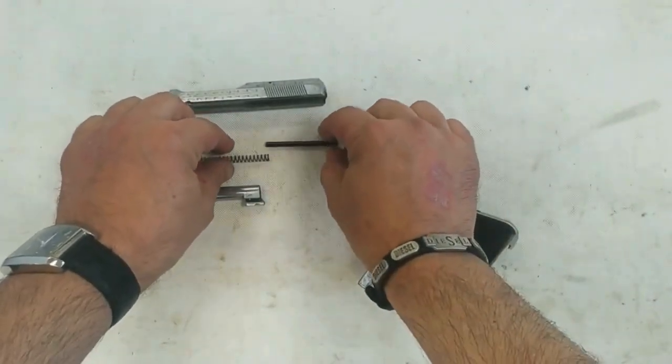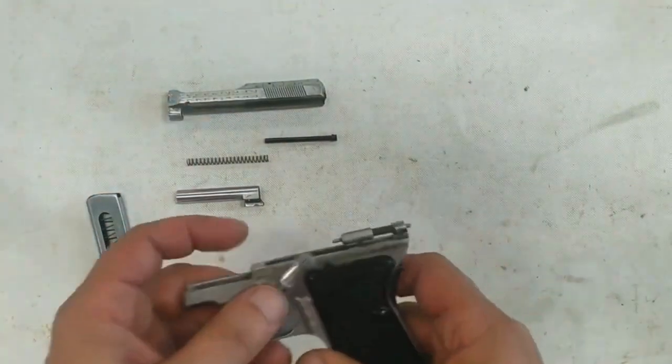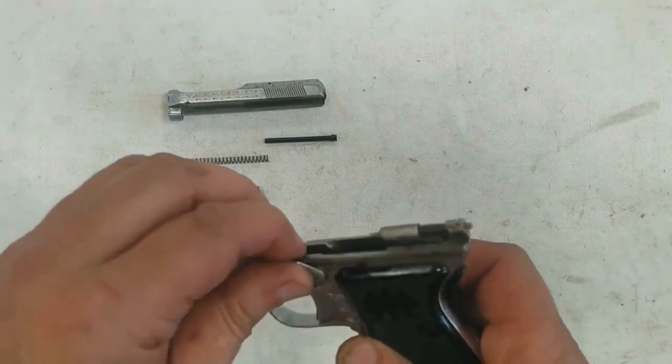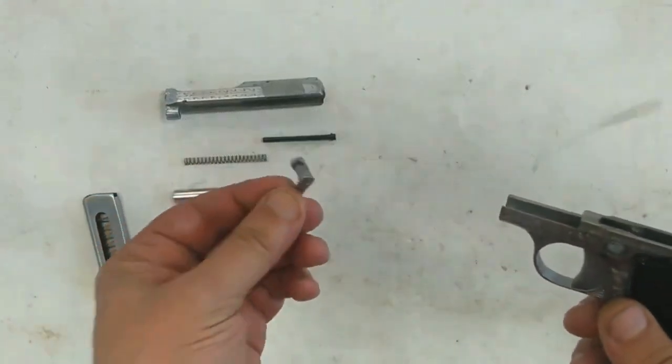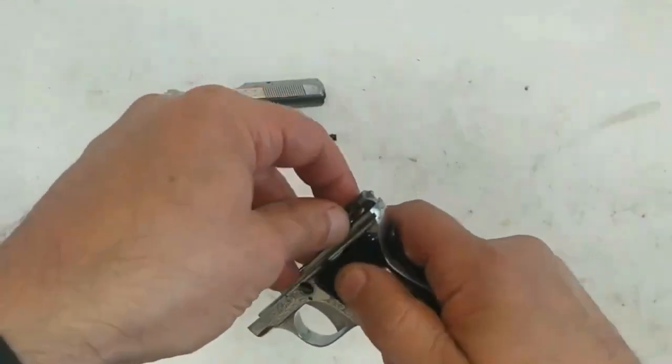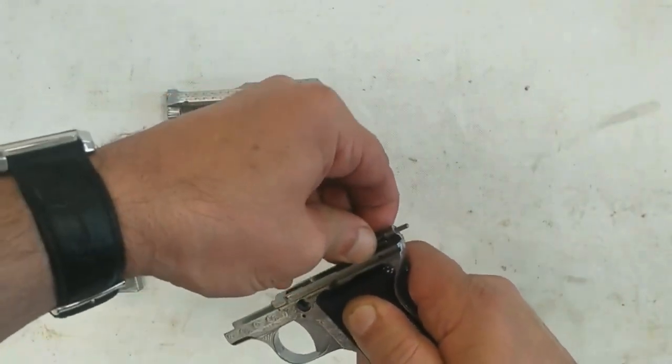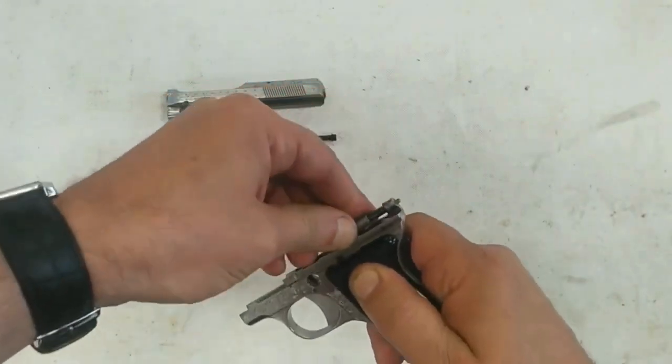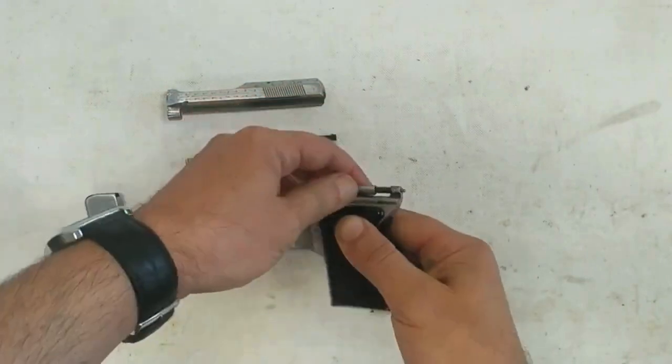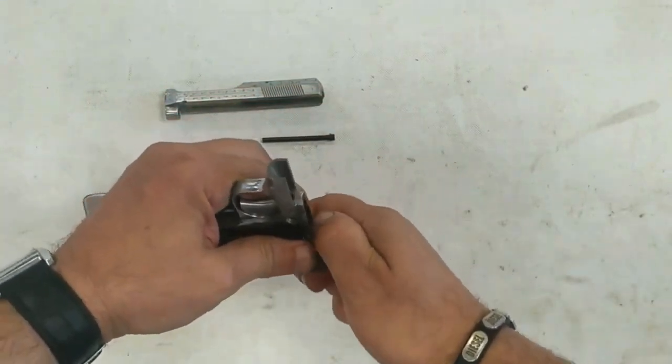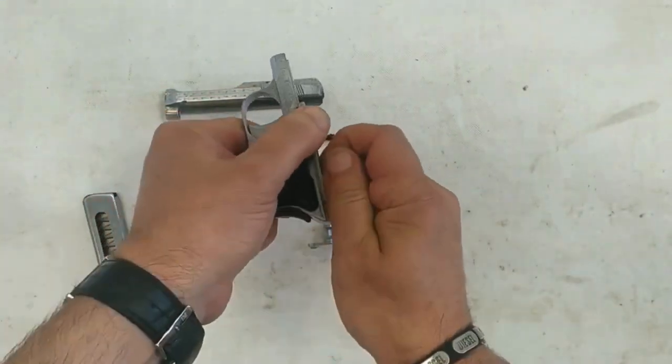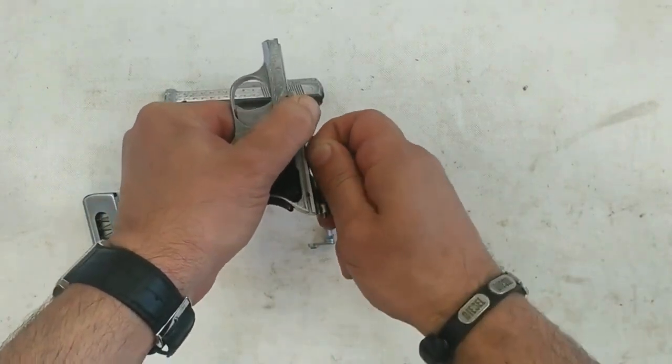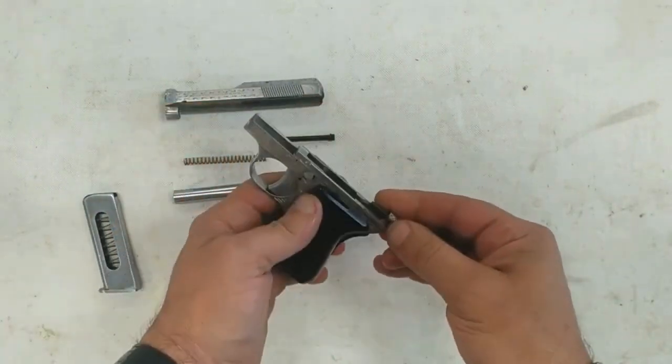In 1926, a third version, sometimes known as model 1926, was introduced, in which the firing mechanism was completely redesigned to incorporate a disconnector similar to that used in the Beretta M1923. This simple and economical modification contributed to the fame and commercial success of the 418. It involved a slight change to the left grip and can easily be seen without dismantling the gun.